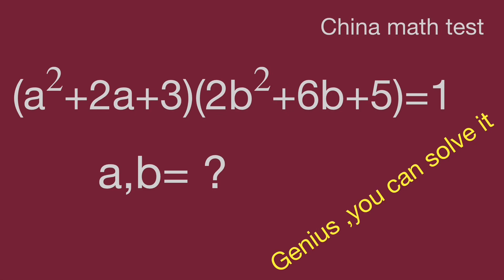We have (a² + 2a + 3) multiply (2b² + 6b + 5) equal to 1. Find the value of a and b. Would you please find the value of a and b? Pause the video and try it. When you're ready, keep watching the video to get the result.